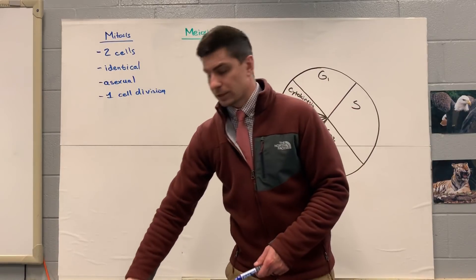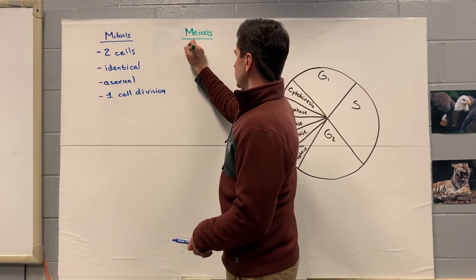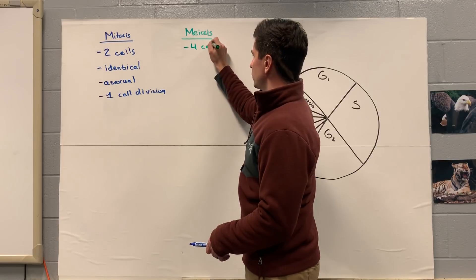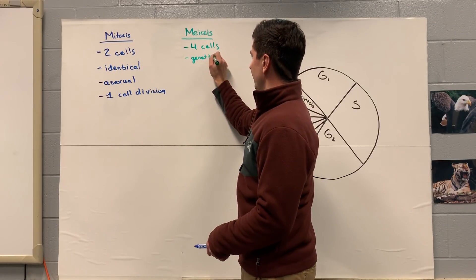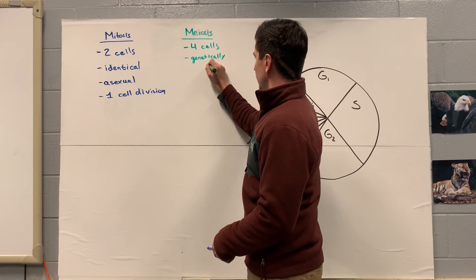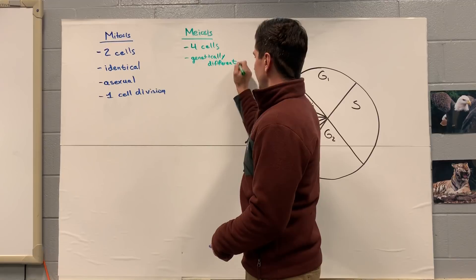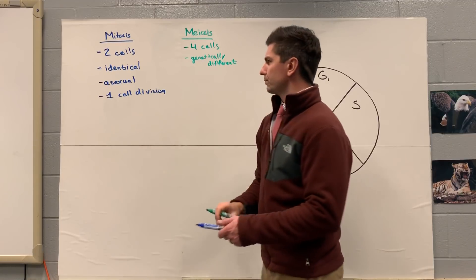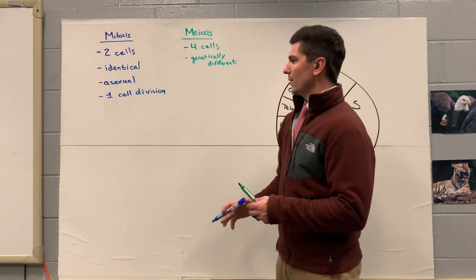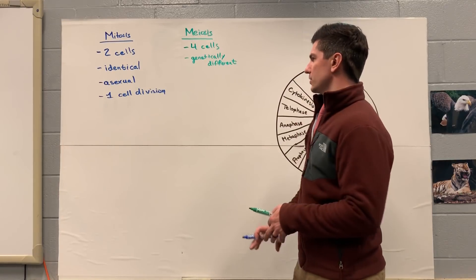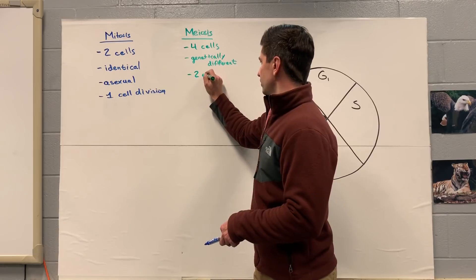I'm going to come back to mitosis in a second, but just to compare it to meiosis - we're going to have four cells in meiosis. These are going to be genetically different. Meiosis is still asexual, but we're going to talk about how it's a little bit different than mitosis later on. For meiosis, we're going to have two cell divisions.